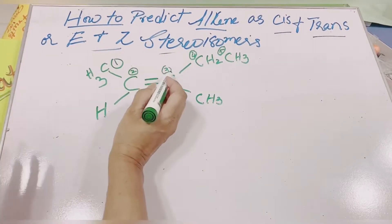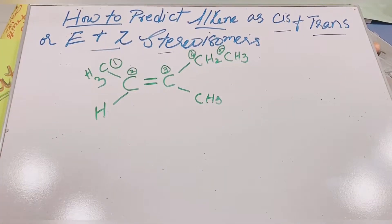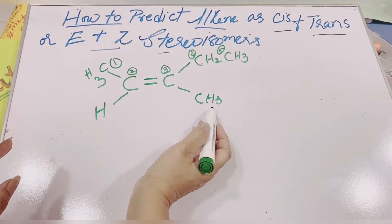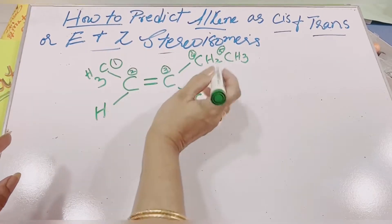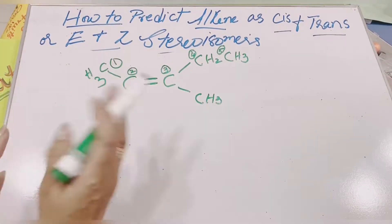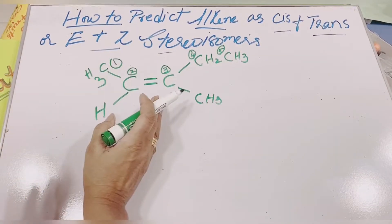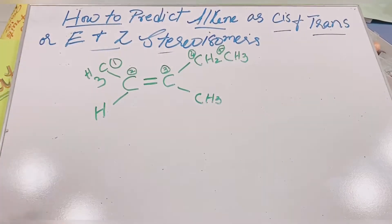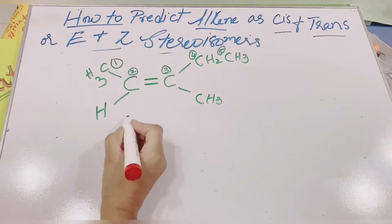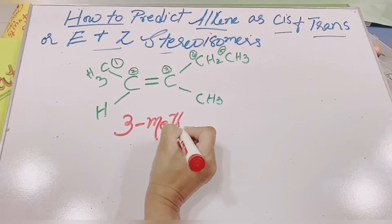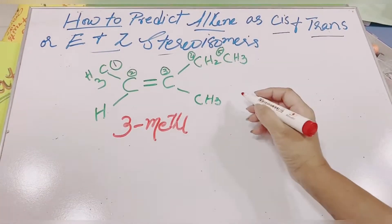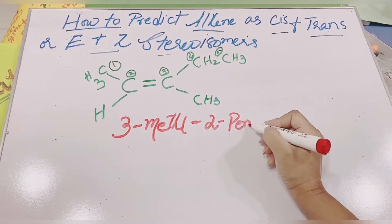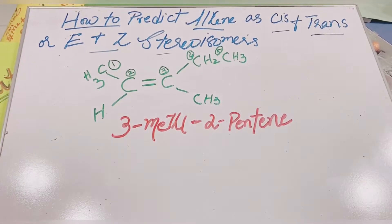I'm writing all these things clearly for beginners who are a little weaker in nomenclature, so they can understand how to name a compound when you have a double bond and a substituent. You select the longest continuous chain having a double bond, and the substituent is named first. So the name is 3-methyl-2-pentene.